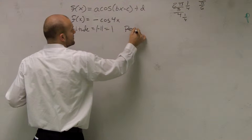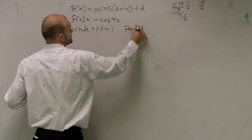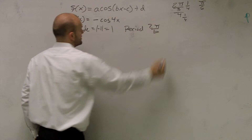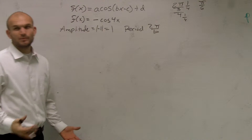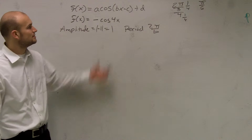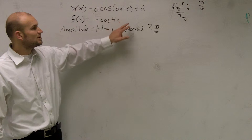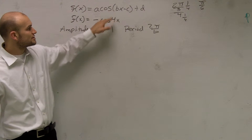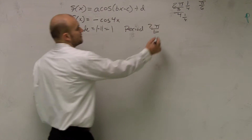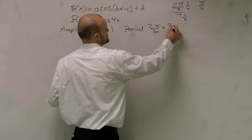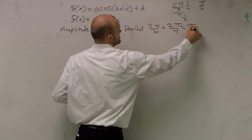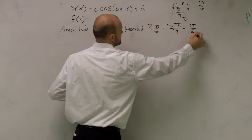Then I need to find the period, which remember is 2π over b. Now remember when we had fractions — these ones have been pretty easy. You're just going to do 2π over b, where b is your number in front of x. So you have 2π over 4, which is π over 2.